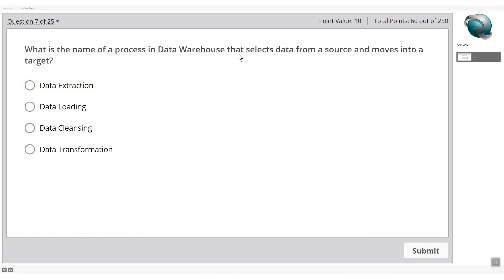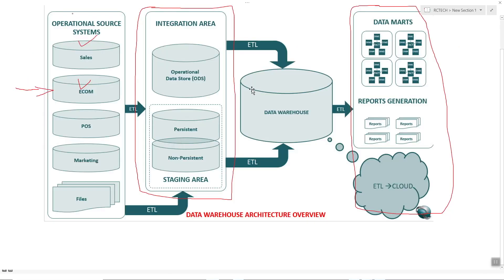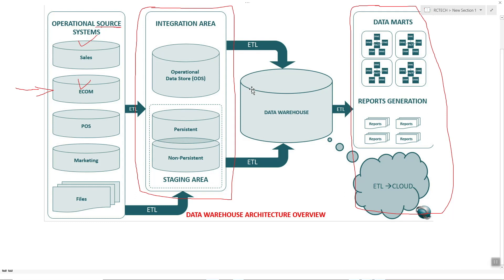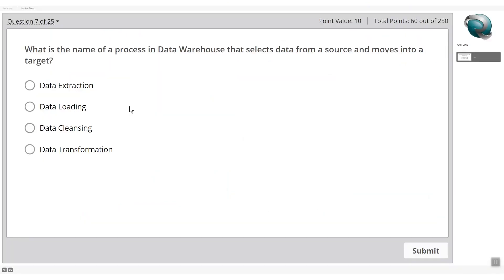What is the name of the process in a data warehouse that selects data from a source and moves it to a target? Referring to the architectural diagram, moving data from a source to the staging area target is part of ETL — extraction, transformation, and loading. Selecting data from the source is specifically data extraction, not loading, cleansing, or transformation.